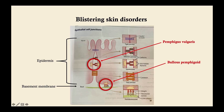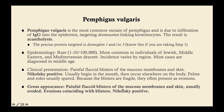Pemphigus vulgaris is the most common variant of pemphigus, but it's not very common overall. It's due to infiltration of IgG immunoglobulin G into the epidermis, which targets desmosomes that link keratinocytes. Because it destroys the desmosomes, the keratinocytes separate — we call that loss of cohesion acantholysis. The precise protein targeted in the desmosomes is desmoglein 1 or desmoglein 3, which you'll want to know for Step 1.